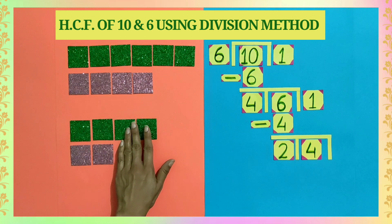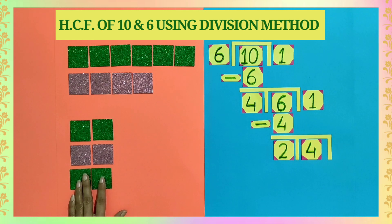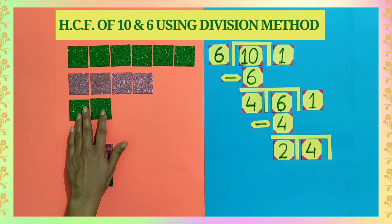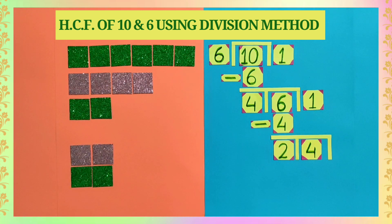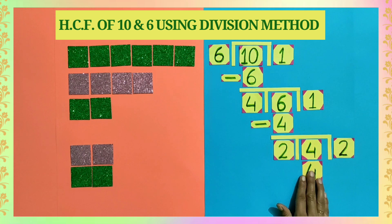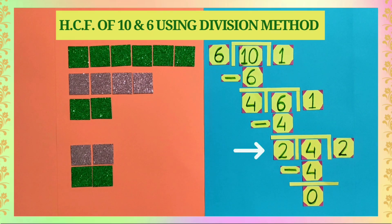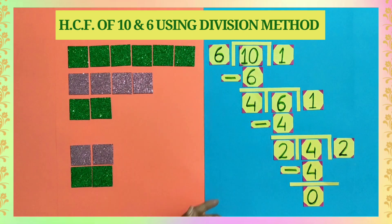2 and 2 squares are equal in number but we are still left with 2 green tiles. We will bring them down and remove the tiles that we have already divided. So here, we get pink and green tiles in equal numbers and no square is remaining. Now, in the written form, 2 times 2 is 4 and the remainder is 0. So students, the last divisor, that is the number 2, is the highest common factor of 6 and 10.